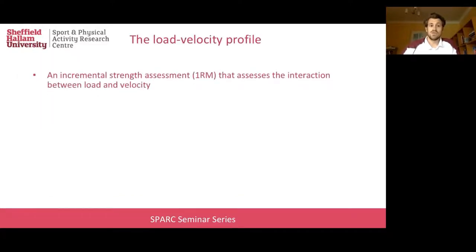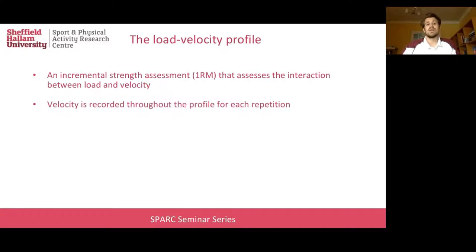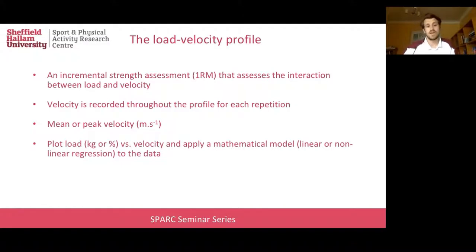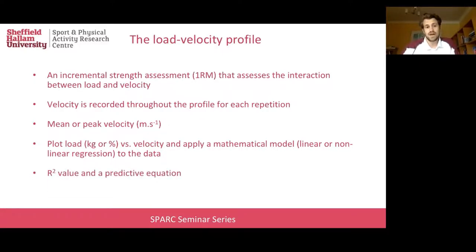So what is the load velocity profile? It is essentially an incremental strength assessment very similar to a 1RM, with the only real difference being that velocity is recorded throughout each repetition — likely mean or peak velocity. Mean velocity is the average velocity across the concentric phase of a lift, while peak velocity refers to the instantaneous maximum occurring during the concentric portion. Once the data is collected, we plot loads — either absolute or relative — against velocity and apply a mathematical model, typically linear or non-linear regression, giving an R-squared value and a predictive equation.